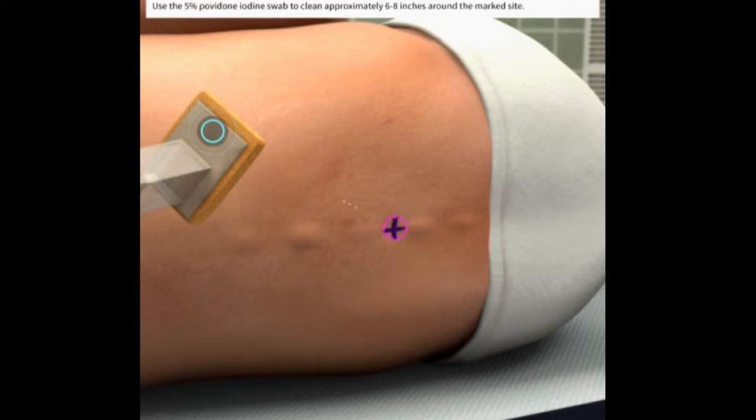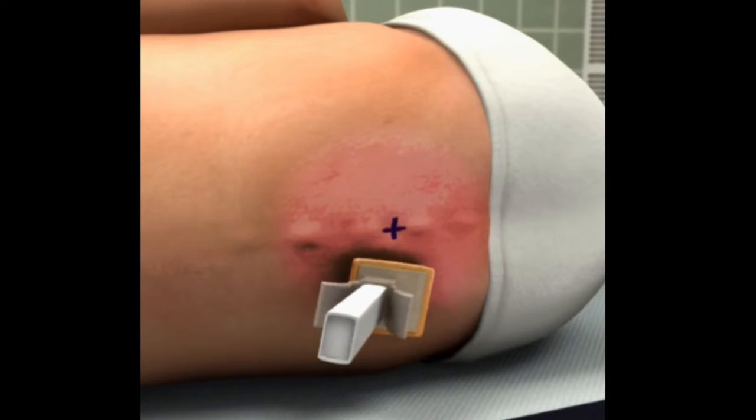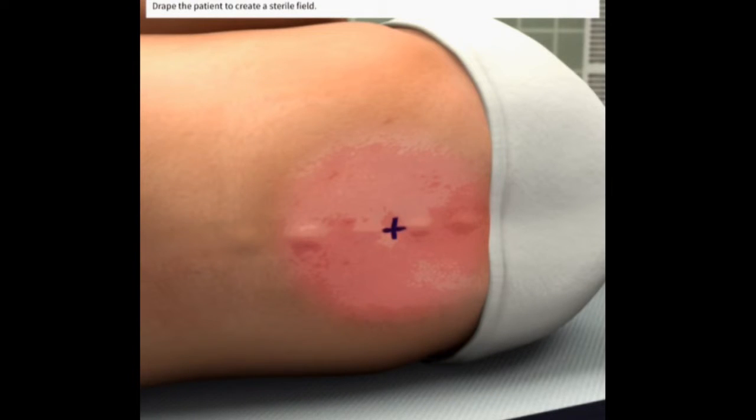Indications. Suspected subarachnoid hemorrhage: patient with thunderclap headache, headache with syncope, severe or atypical headache, headache with new neurologic deficits,